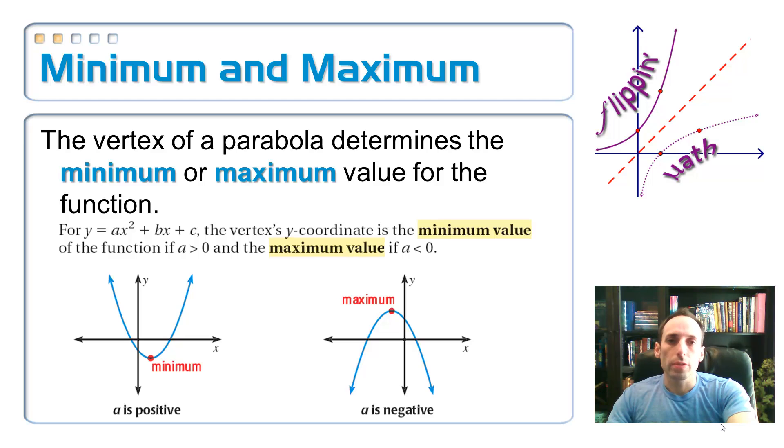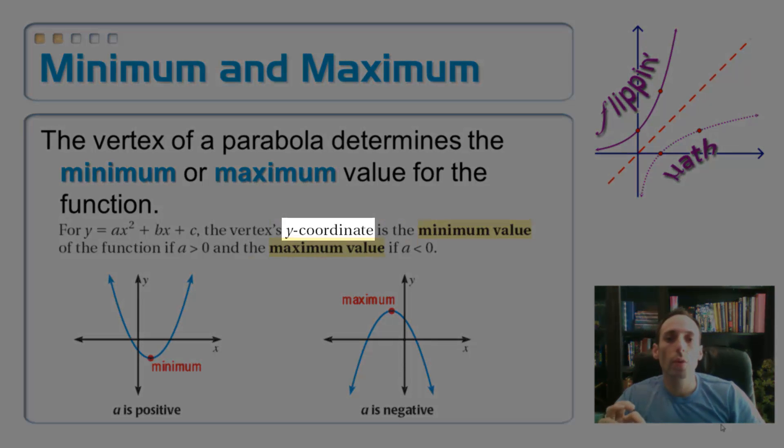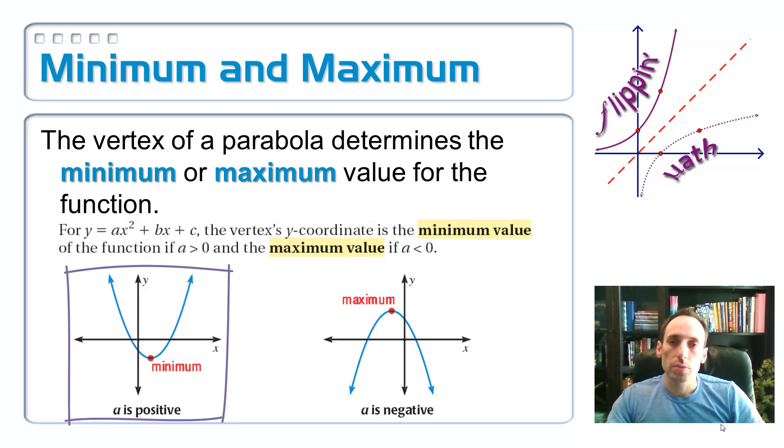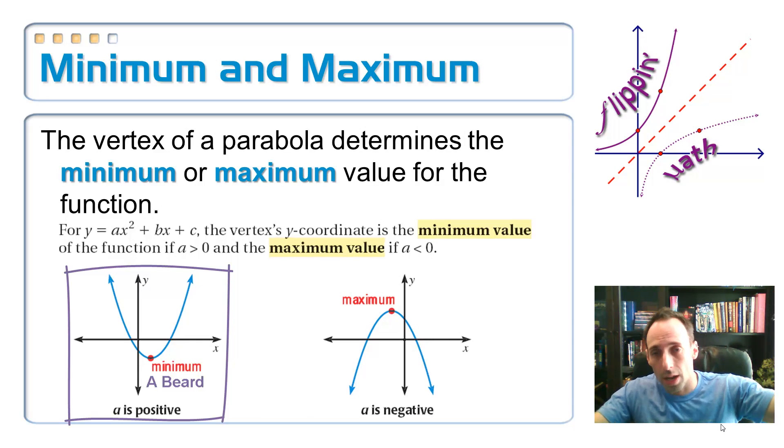The vertex of a parabola is going to determine the minimum or the maximum value for that function, and specifically it's the y-coordinate. If your a is positive, this means you've got yourself a beard - it's going to open upwards, and your vertex is down at the bottom. So you're going to have yourself a minimum point.